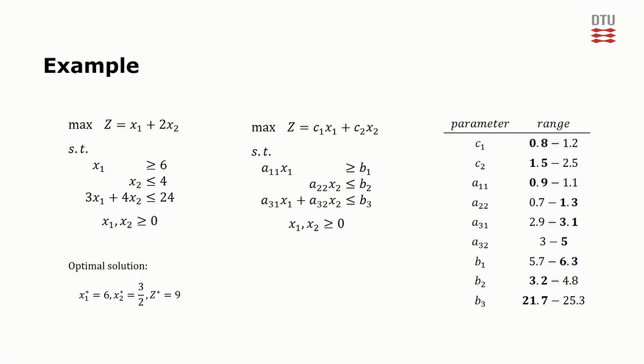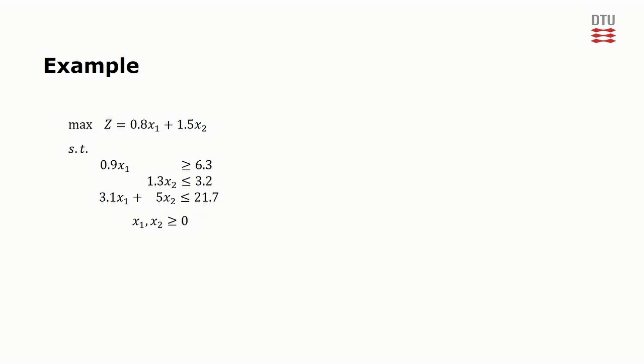We can now solve the problem using the highlighted values of each parameter. The optimal solution to this problem is x1 equal to 7 and x2 equal to 0. The optimal objective value is 28 fifths, which is equal to 5.6. This is quite a lot lower than the expected value of 9 that we had before. Furthermore, the basis variables are different.